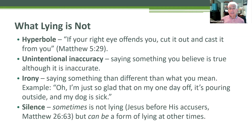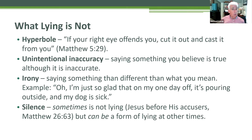Lying is also not unintentional inaccuracy. If we say something we believe to be true, although it's not accurate, that doesn't mean we're telling a lie. It does mean we're responsible for correcting untruths where we can, but an unintentional inaccuracy is not a lie — we thought we were right, we thought we held truth. Lying also is not using irony, another literary or language device.